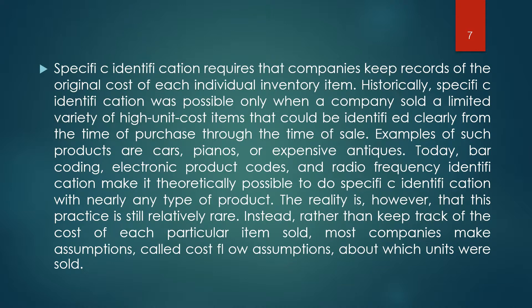Specific identification requires that companies keep records of the original cost of each individual inventory item. Historically, this was possible only when a company sold a limited variety of high unit-cost items clearly identifiable from purchase through sale — examples include cars, pianos, or expensive antiques. Today, barcoding, electronic product codes, and radio frequency identification make it theoretically possible to do specific identification with nearly any type of product. However, this practice is still relatively rare.